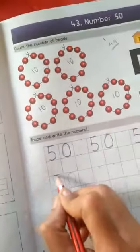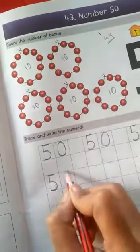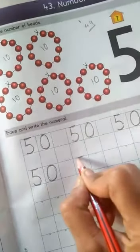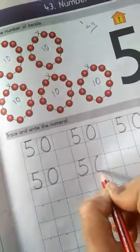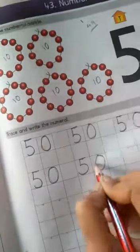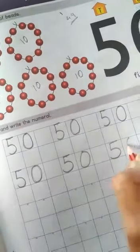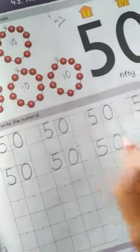Write here. Five, zero. Say and write. Five, zero, fifty. Leave this box right here. Five and zero. Five, zero, fifty. Leave this box right here. Five, zero, fifty.